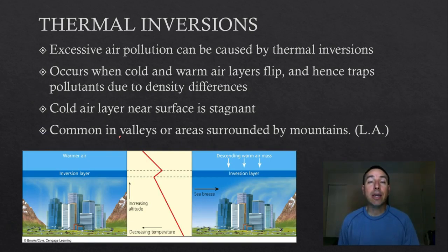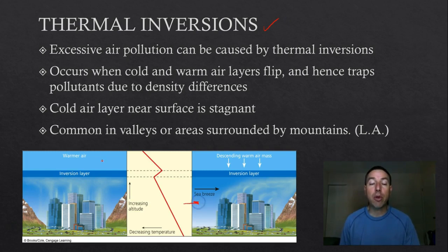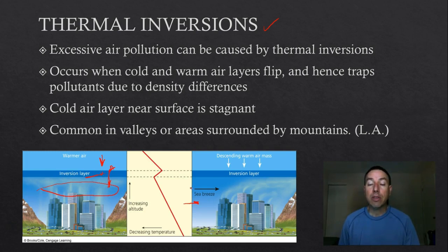Cities like LA, Denver, and Salt Lake City have a huge problem with air pollution because of an atmospheric phenomenon called a thermal inversion. In a thermal inversion, cooler air found in valleys or coming off the ocean gets trapped by a warm air layer above it. This inversion layer in between doesn't allow the two to mix, so all the pollutants from the city get trapped and can't get out — especially if you're in a valley like Salt Lake City or Denver. In the case of LA, you have a cool sea breeze coming in and descending warm air due to the Sun's intensity at that latitude.